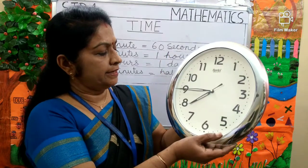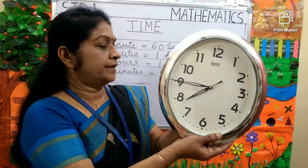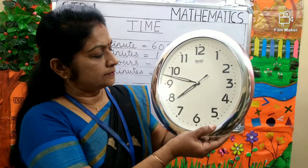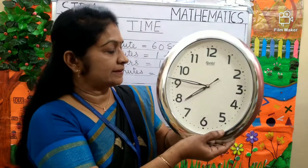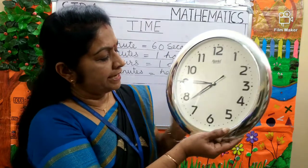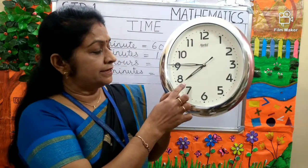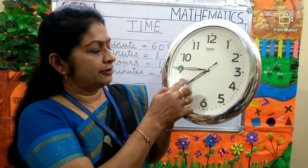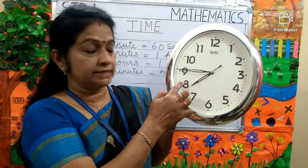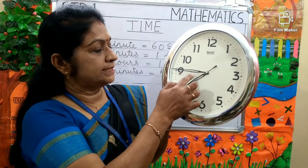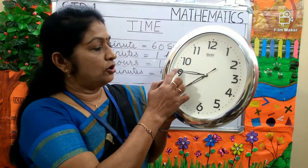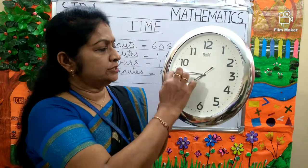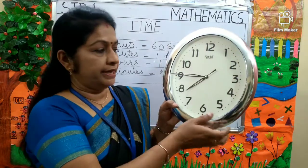Again it has reached on 9. Can you tell me the time? It is 7.45. The hour hand is between 7 and 8. So, the time is 7.45, or you can say quarter to 8. 15 minutes left to 8, so you can say quarter to 8.